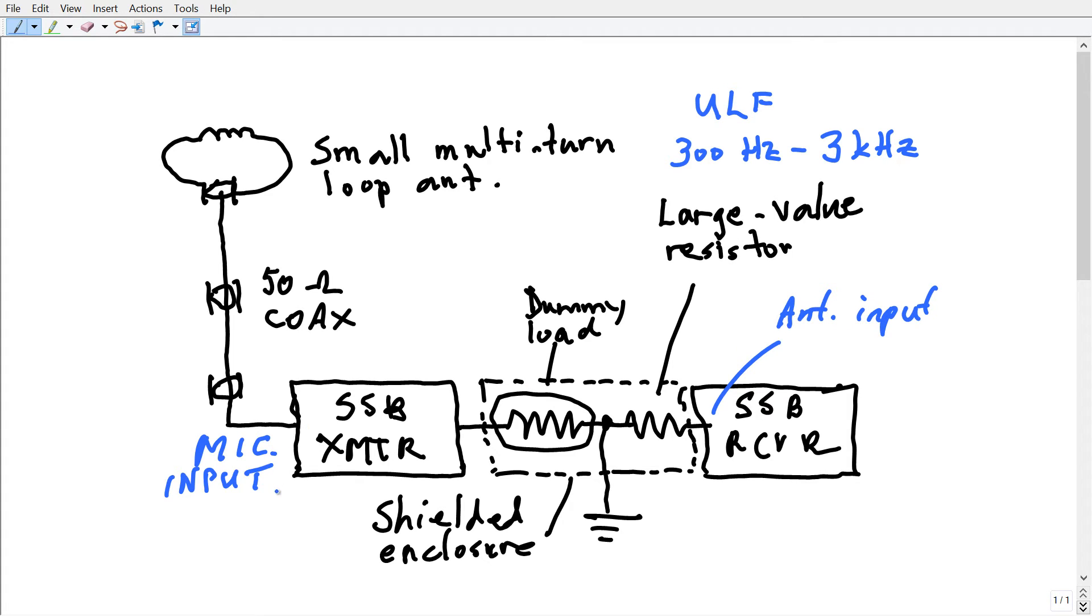Now suppose that you go on upper sideband and you tune this single sideband transmitter to exactly, let's just say, 3.500 MHz. Now that's in the CW band, but it doesn't matter because we're not sending anything out over the air.